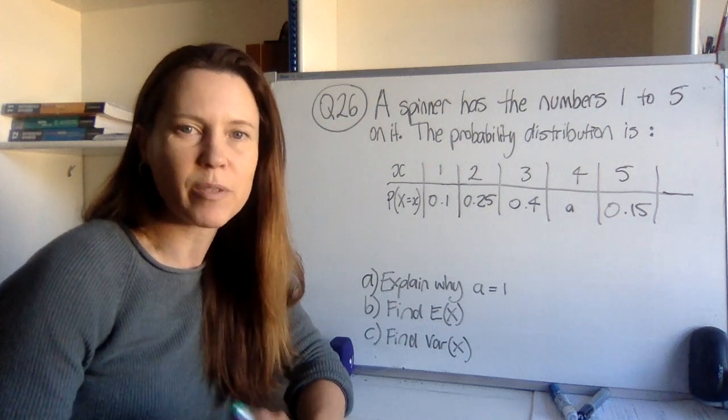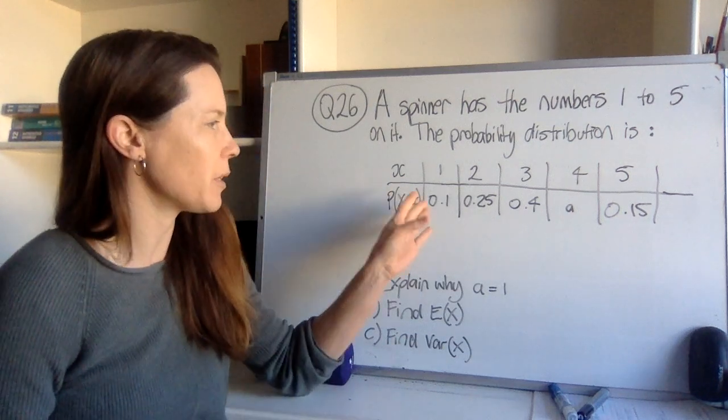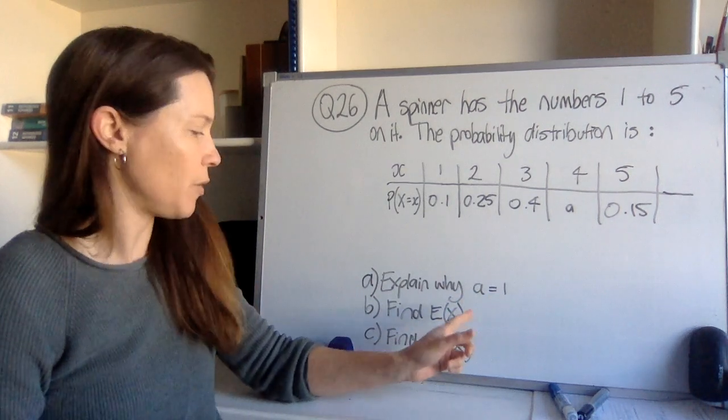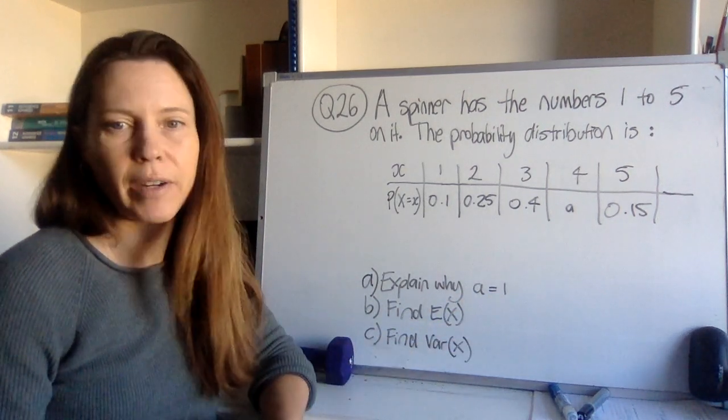Question 26 is a spinner with five numbers on it. We're given the probability distribution and we have to explain why a equals 1, find the expected value, and then find the variance.